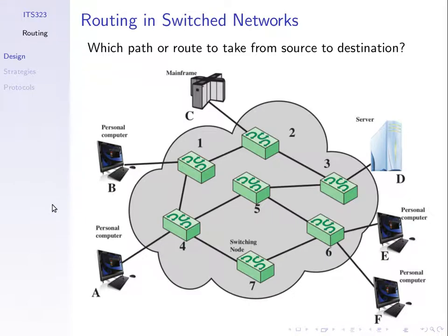The problem is: given a network — a set of devices who want to communicate with each other, A to F, D to B, and so on — and in a switched network we have the intermediate nodes, the switches. We need to find a path through this network from one device to another.